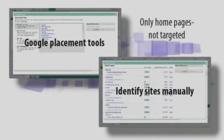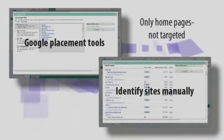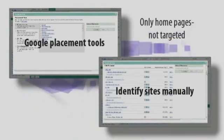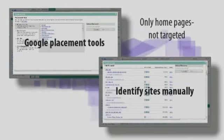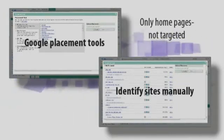First, Google Placement tools will only identify the home pages for your targeted keywords. The big mistake is your ad will not be targeted, because they'll show your ad anywhere on these sites regardless of whether the page is about your keyword or not. With this method, you are not in control of where your ad is shown, and this can be extremely costly for you.